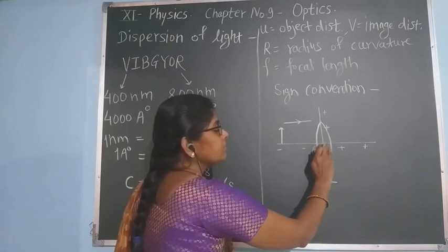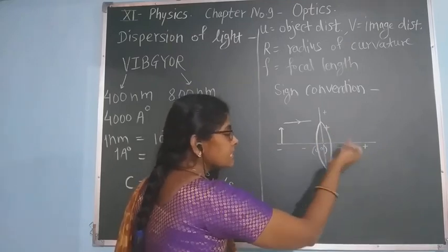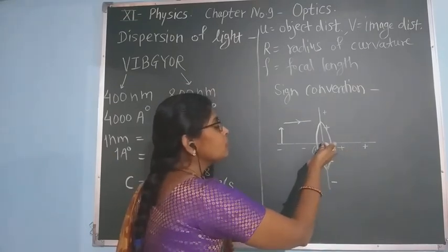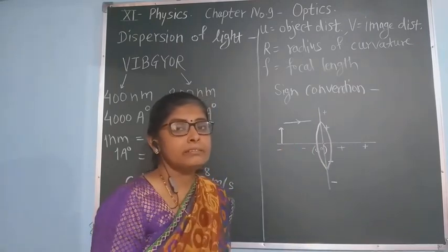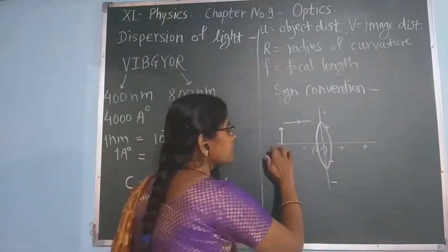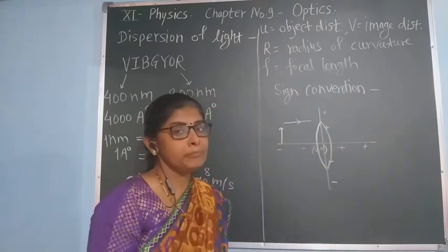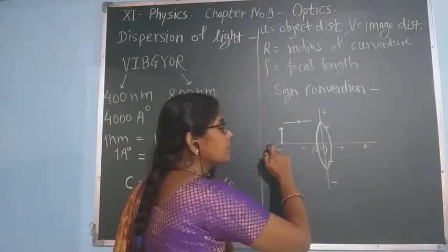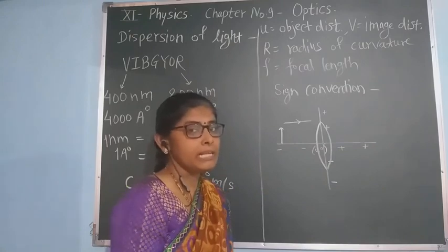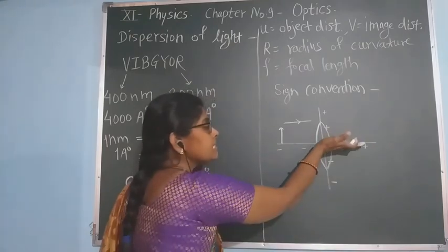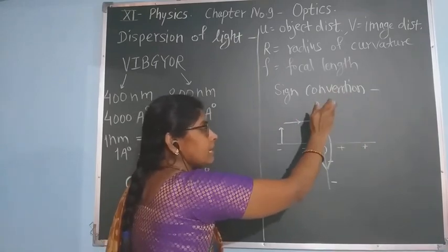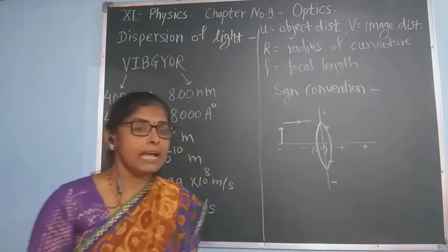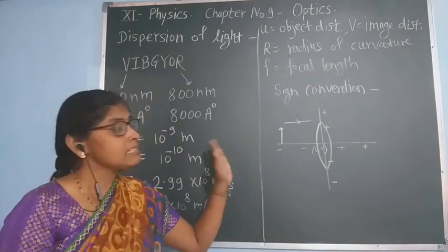Distances measured towards the right side of the lens or mirror are taken as positive, while distances towards the left side are negative. The x-axis is taken as the principal axis. Distances measured above the principal axis are considered positive, and below the principal axis are considered negative.